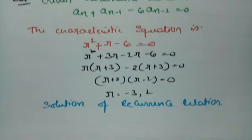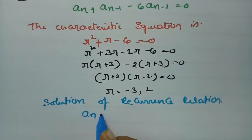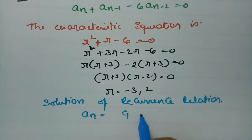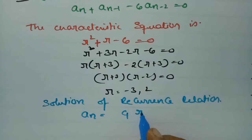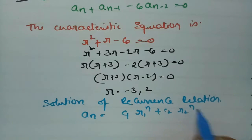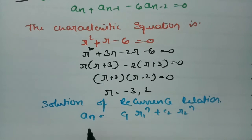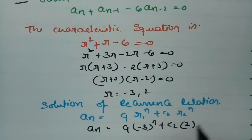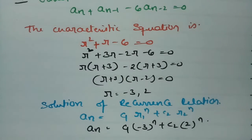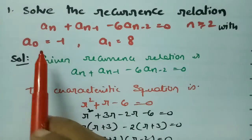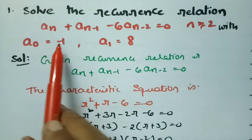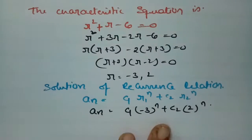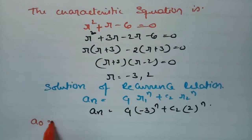According to Case 1, since the roots are real and distinct, the solution is An = C1·R1^n + C2·R2^n. Substituting R1 = -3 and R2 = 2, we get An = C1·(-3)^n + C2·2^n. The initial conditions given are A0 = -1 and A1 = 8.